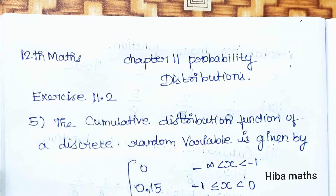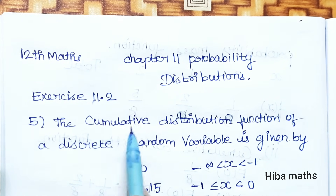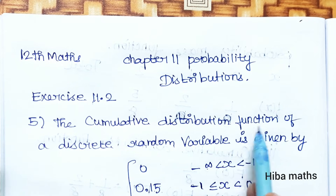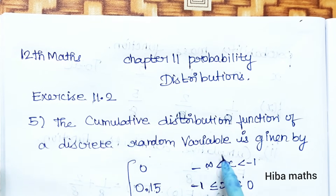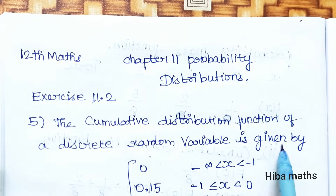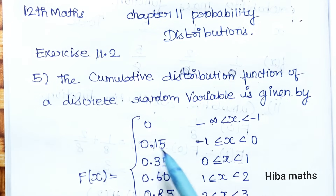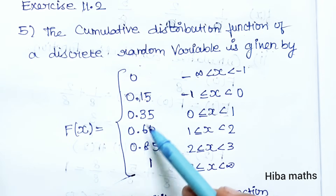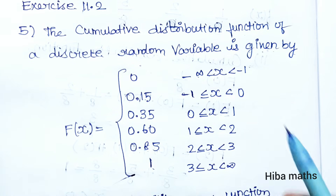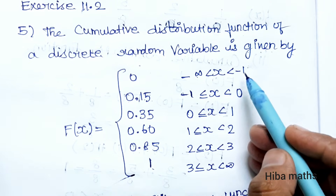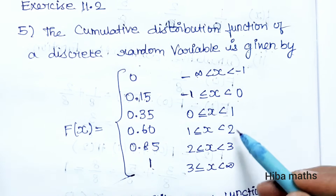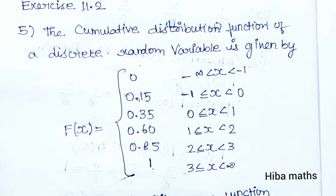This is question 11.25. The cumulative distribution function of a discrete random variable is given by F(x) equal to 0, 0.15, 0.35, 0.60, 0.85, and 1, for x equal to minus 1, 0, 1, 2, 3, up to infinity.